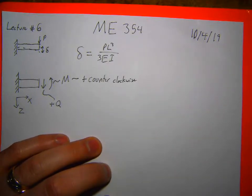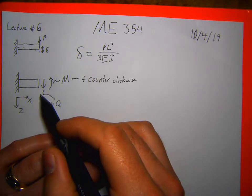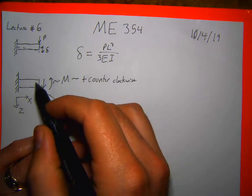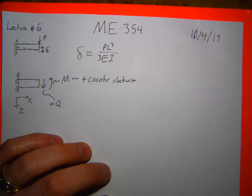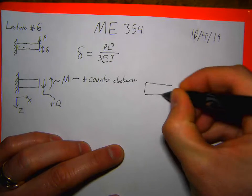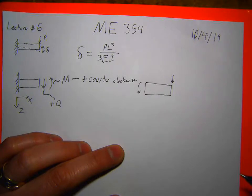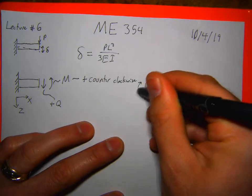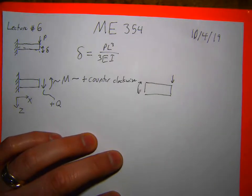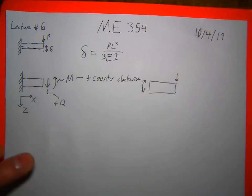Does this mean the top half of the beam is in compression with positive moment? Yes — with this moment, the top half would be in compression. If I drew the other side of the beam, wouldn't it be opposite? I would have it going up like that if it were opposite, which I don't like. Scratch that — let's come back to this on Monday, because I thought I thought this through but clearly I have not.